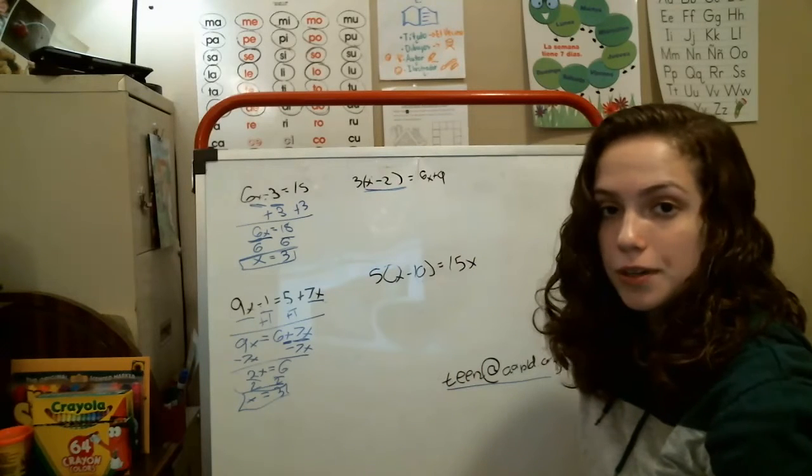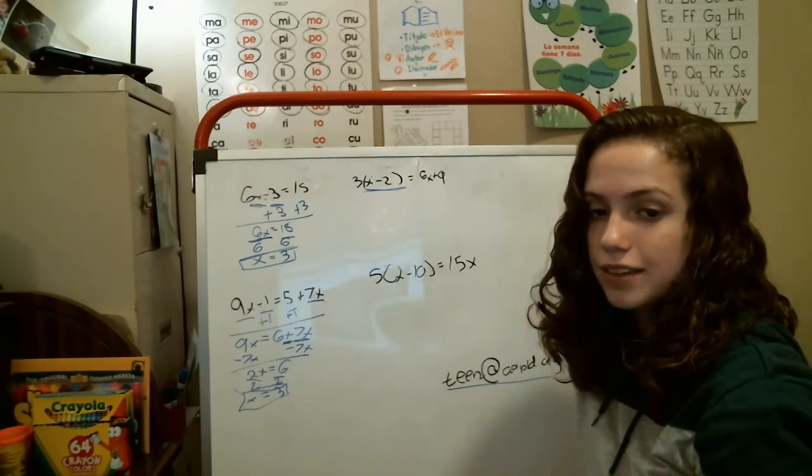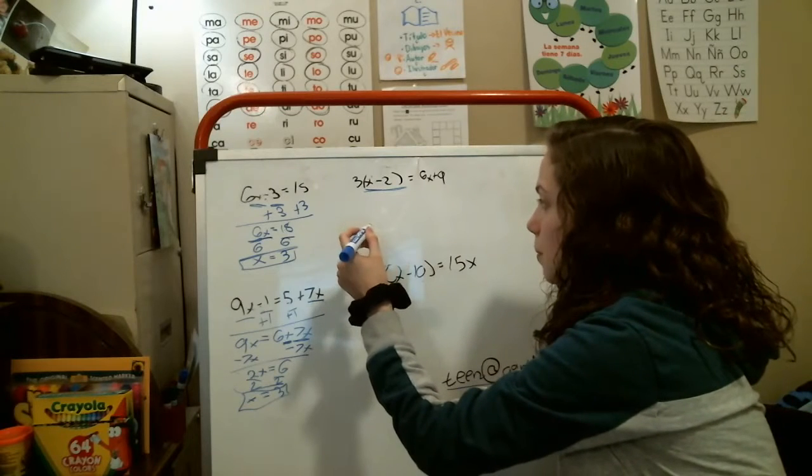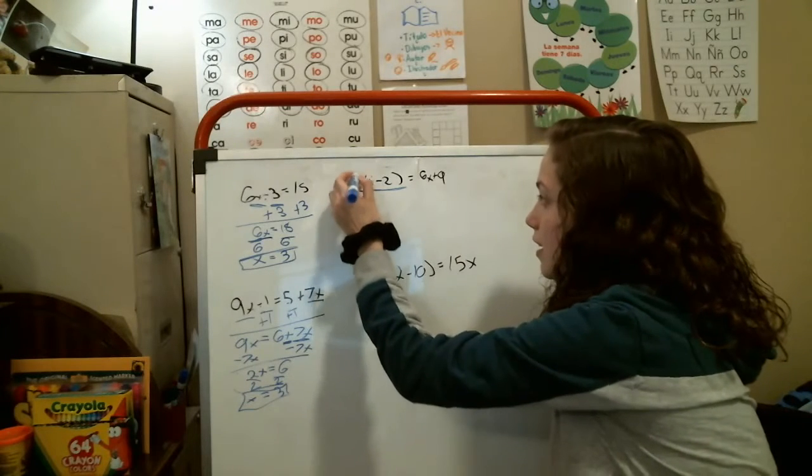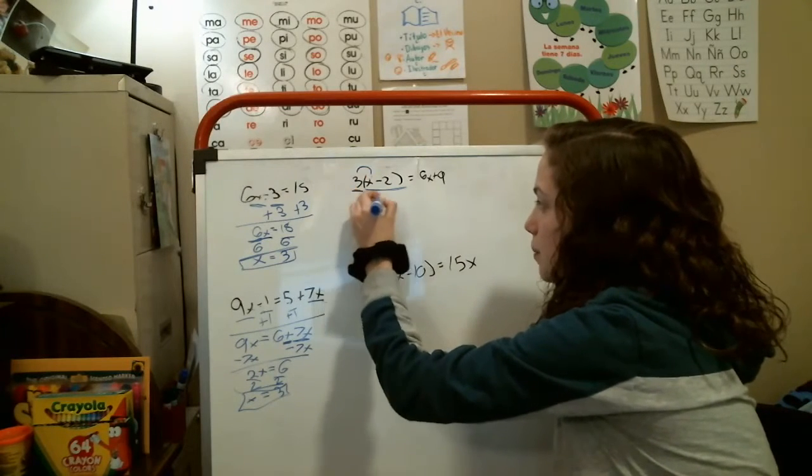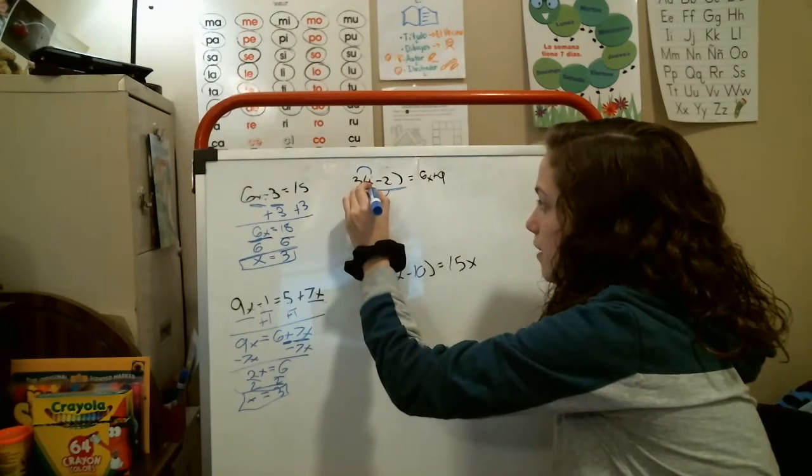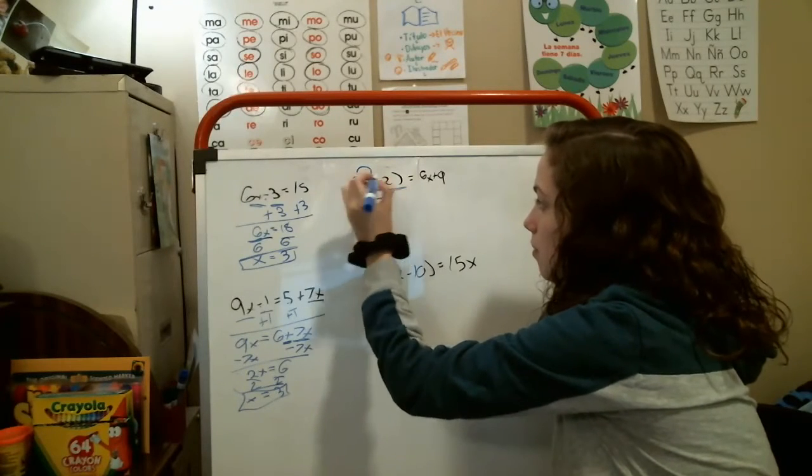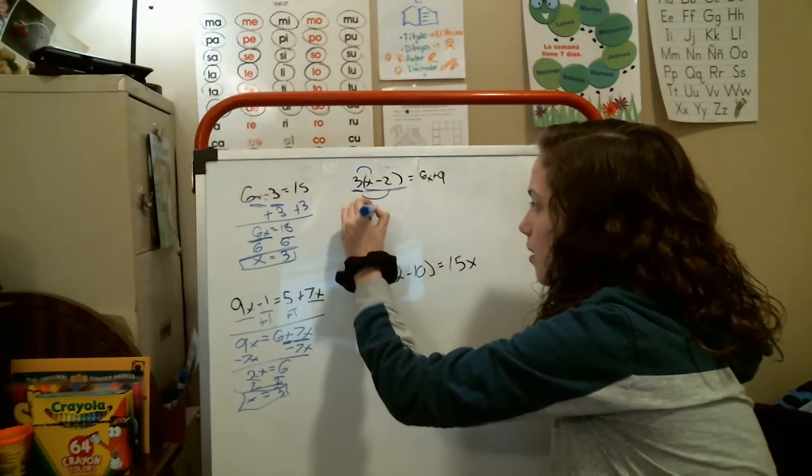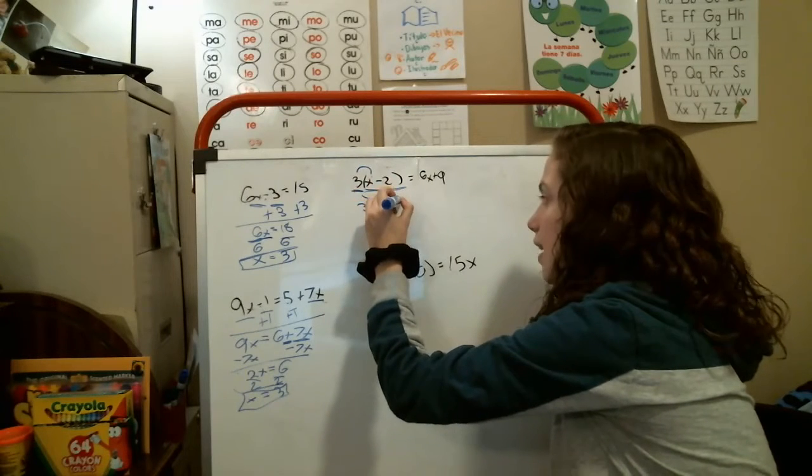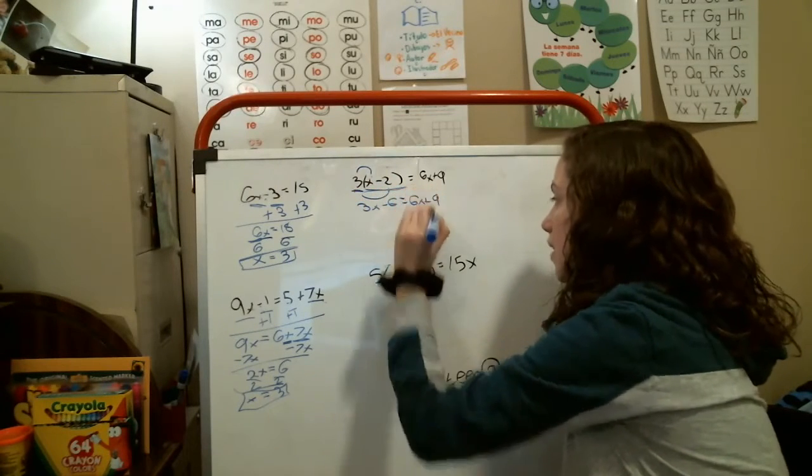Something called the distributive factor or property is going to come in. The distributive property means you're going to take this 3 and distribute it inside the parentheses. You've multiplied this 3 by this x and this 3 by this negative 2. You have 3x now, minus 6, and then you have the rest of the problem over here, which is 6x plus 9.